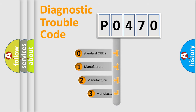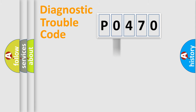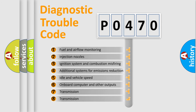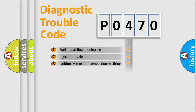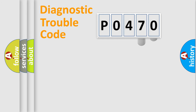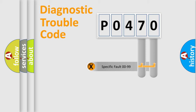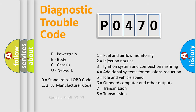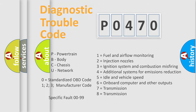If the second character is expressed as zero, it is a standardized error. In the case of numbers 1, 2, or 3, it is a more manufacturer-specific expression of a car-specific error. The third character specifies a subset of errors. This distribution is valid only for the standardized DTC code. Only the last two characters define the specific fault of the group, and this division is valid only if the second character code is expressed by the number zero.